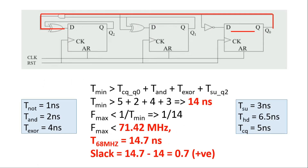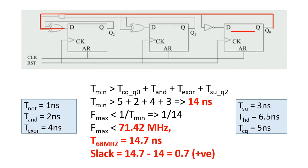When we give the period constraint to the timing tool, it analyzes all paths in a similar way to what we did in this video. Importantly, the timing tool will categorize all paths as either setup paths or hold paths. There are six register-to-register paths, and all six are included in both the setup path list and the hold path list. The difference lies in their ordering.